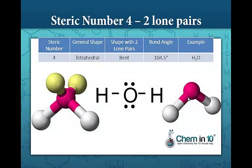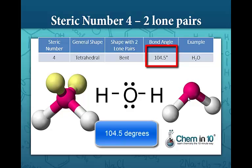If we add another lone pair, like in the water molecule with two lone pairs, we have a bent shape with a bond angle of 104.5 degrees.